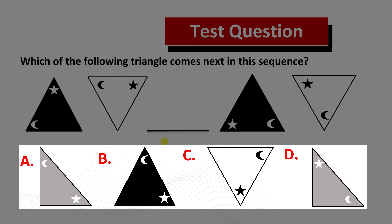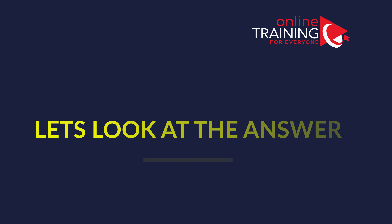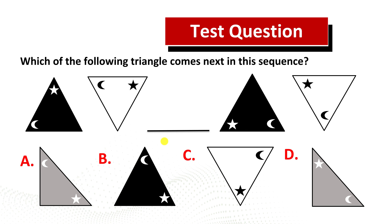Now might be a good time to pause this video to see if you can come up with the answer on your own. Did you come up with the answer? Before I reveal the answer, let me point out a couple of patterns. The first is a pattern of colors: black, white, missing, black, and white again. Next, you have triangles pointing up and down alternately. And then there's a pattern of small shapes inside the triangles — moon and star pairs, all in different positions inside the triangle.